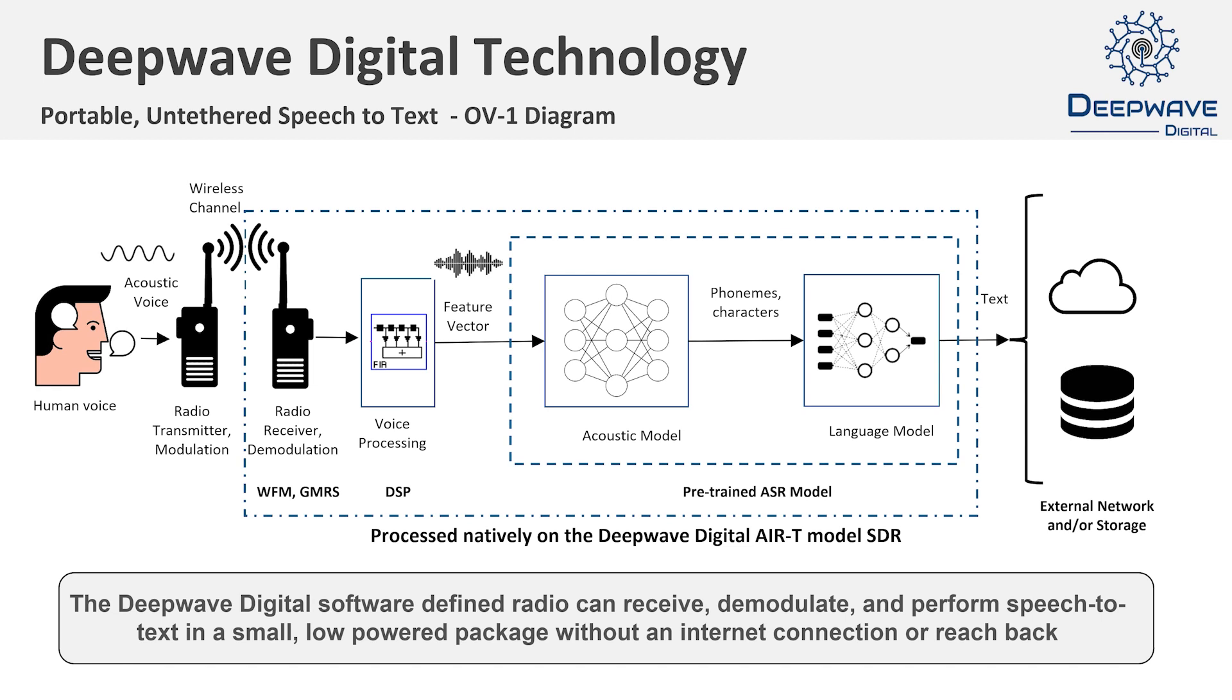The AIRT, performing as a radio receiver, picks up the transmission and processes the signal as needed to demodulate the voice. The demodulated voice signal undergoes another route of processing to extract features needed by the ASR system.